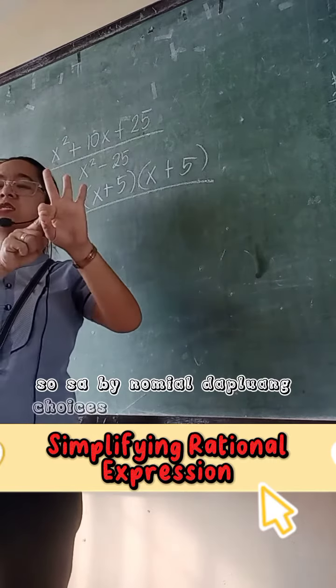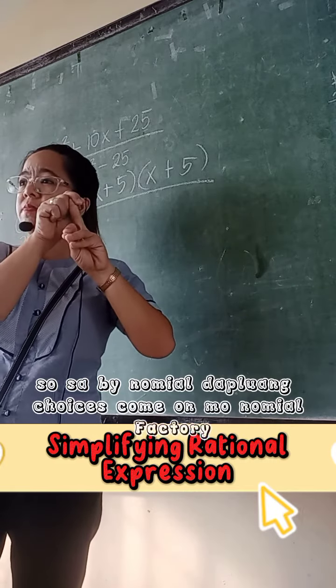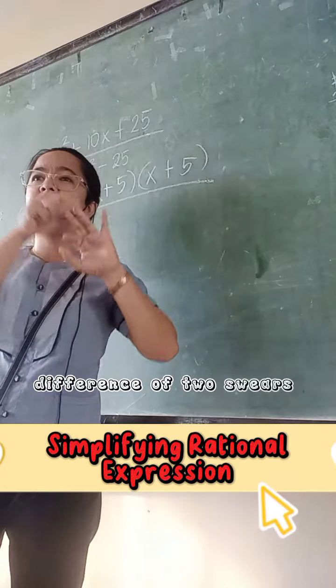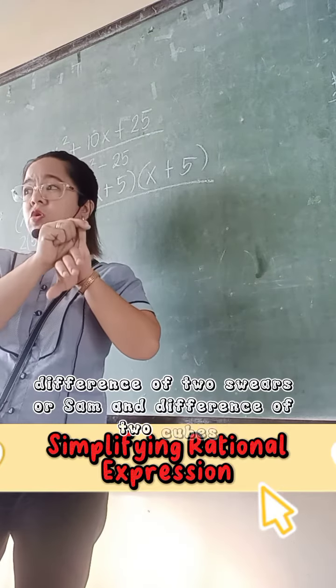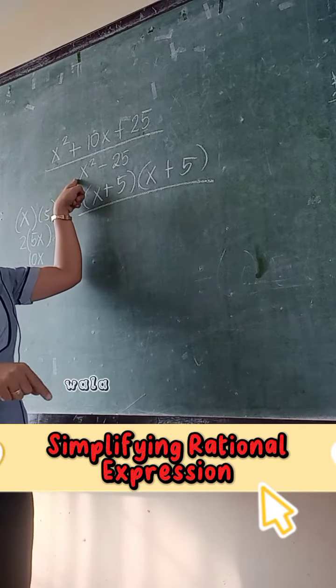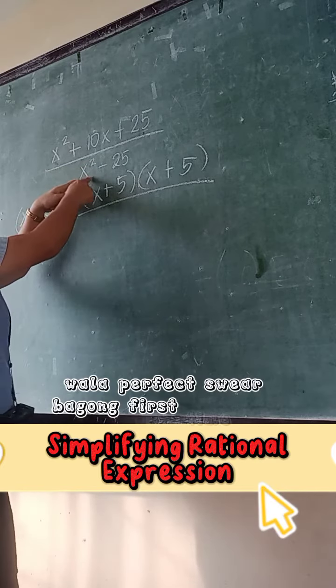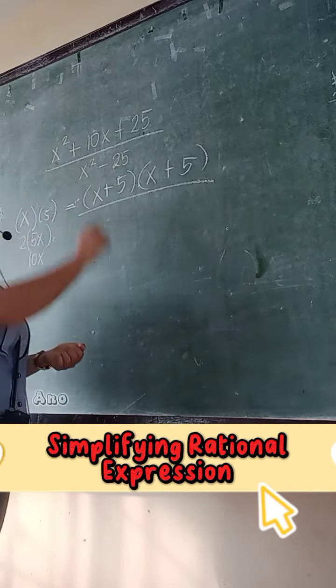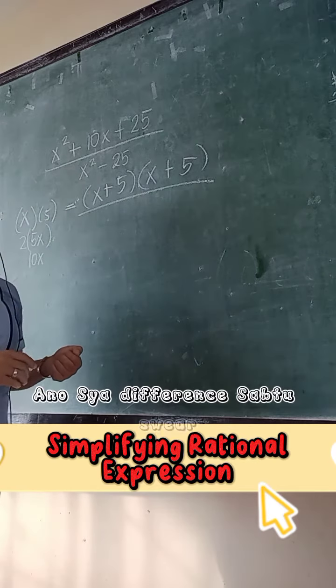So sa binomial, tatlong choices. Common monomial factoring, difference of two squares or sum and difference of two cubes. Okay, tingnan natin. Meron bang GCF? Wala. Perfect squared pa yung first term and last term? Yes. Therefore, ano siya? Difference of two squares.